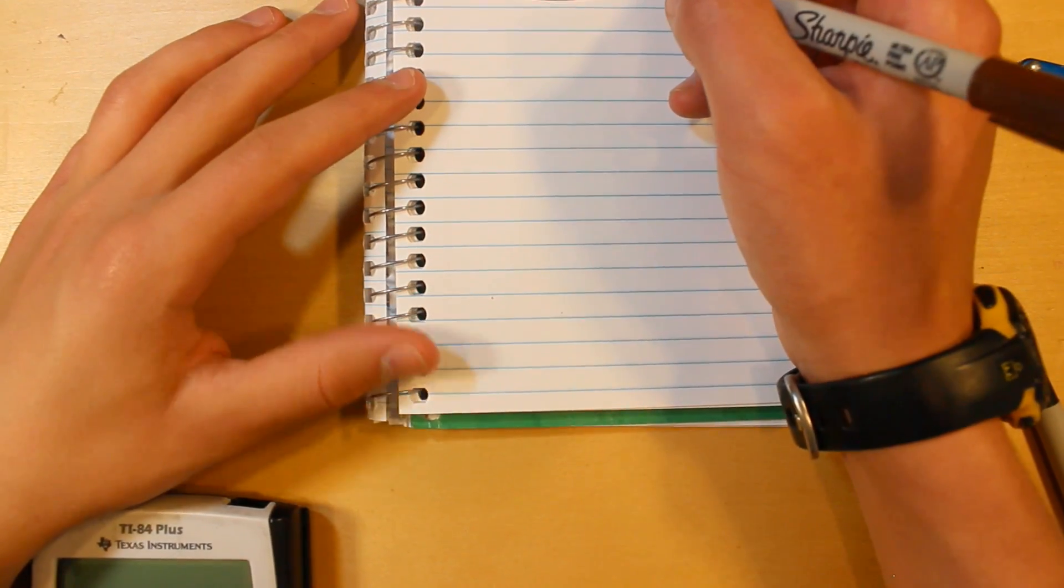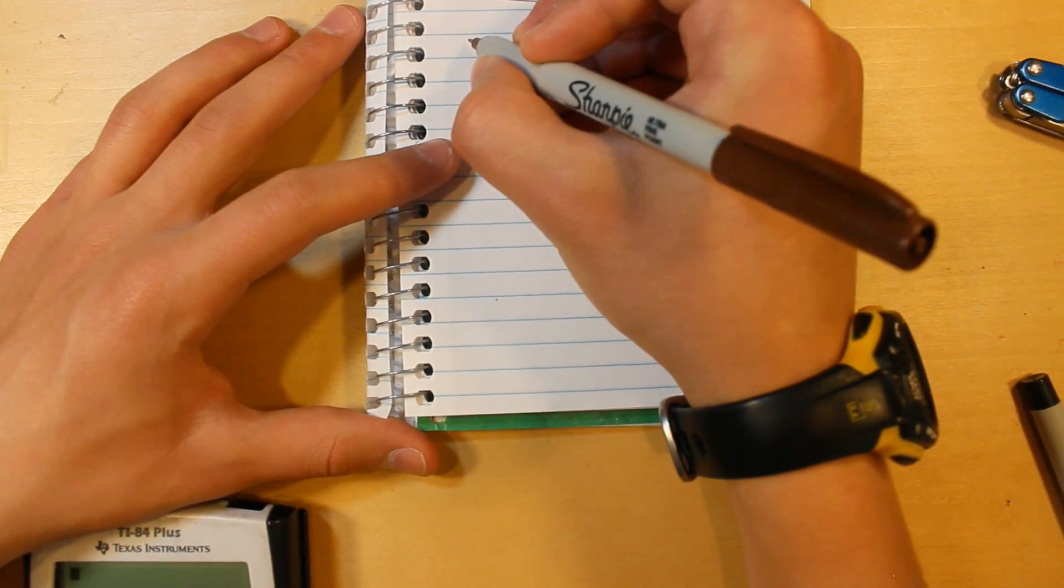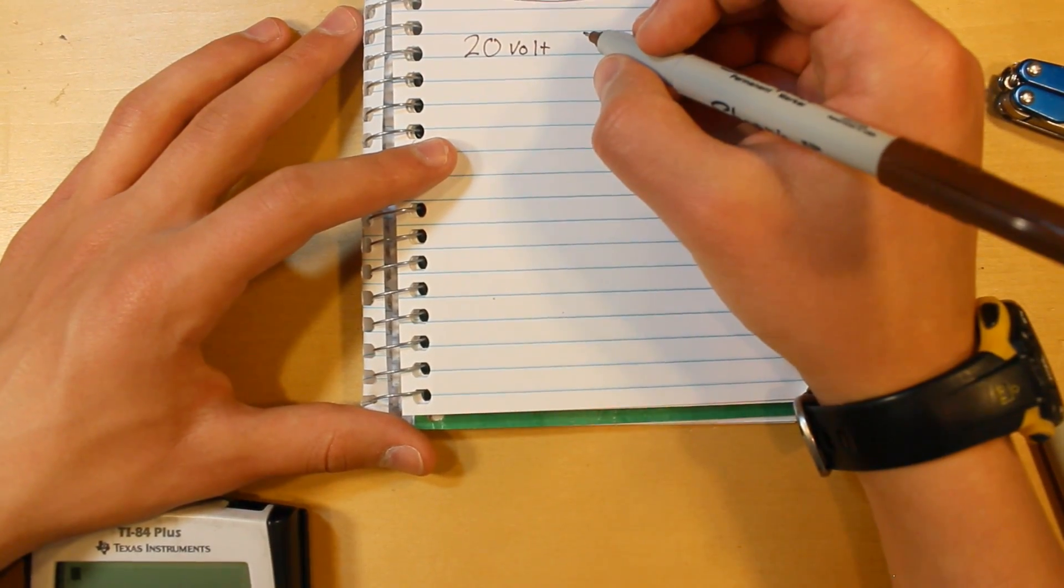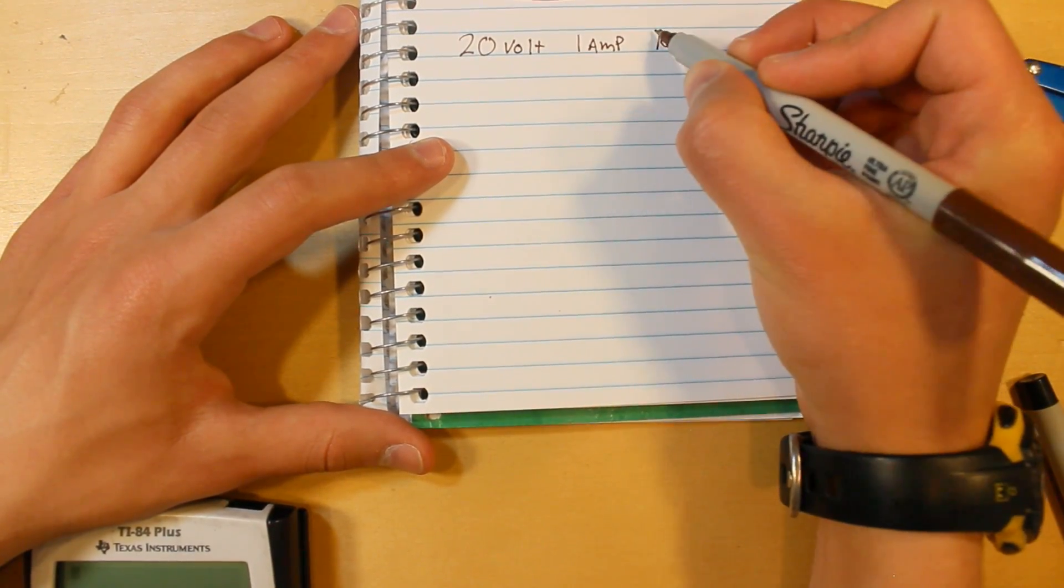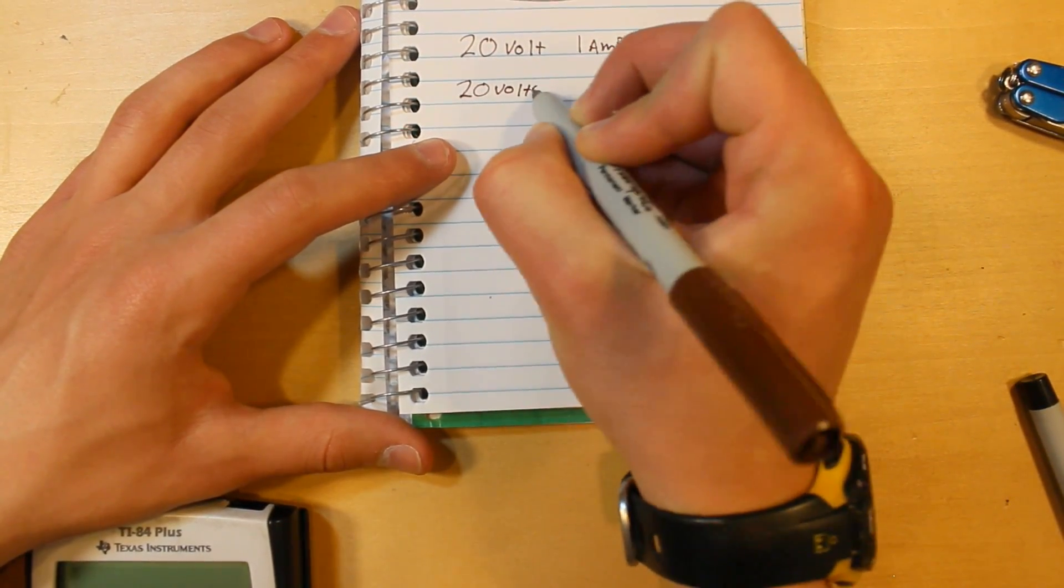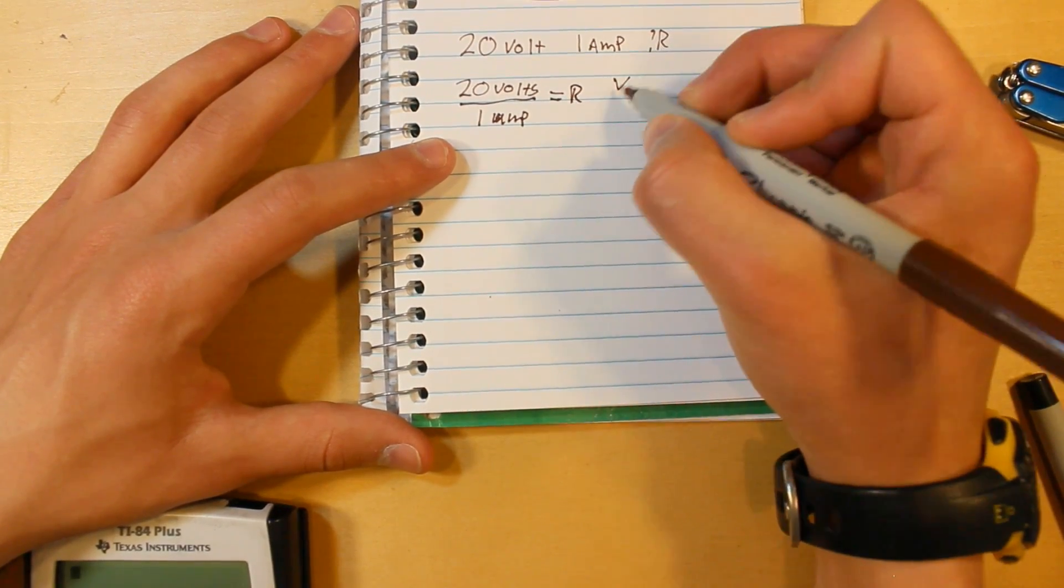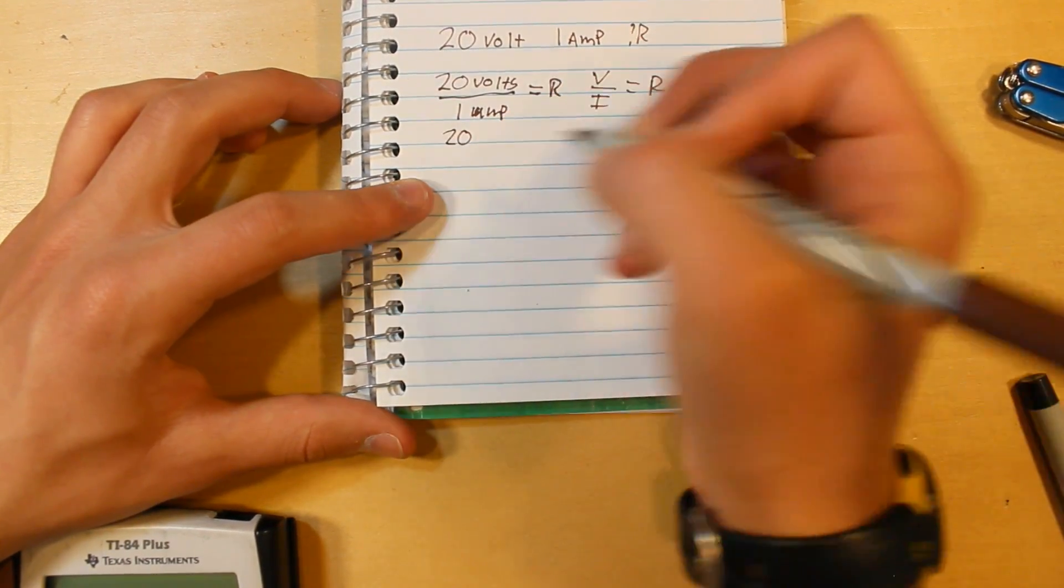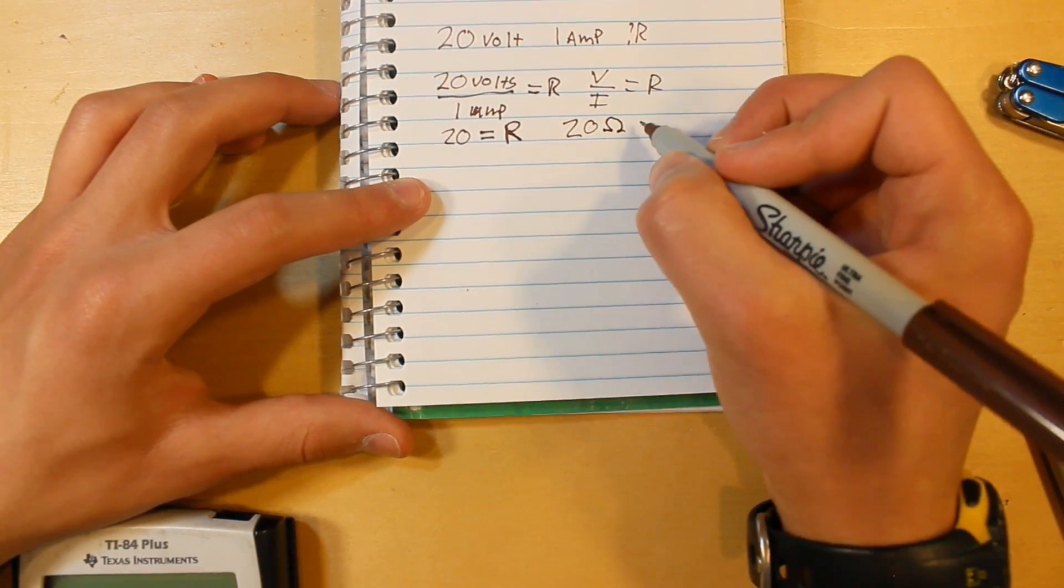Alright, let's look at another example where we have to calculate resistance. So for this, let's say that we have a 20 volt power supply and we have a circuit that needs, let's say, 1 amp. Okay, so how do we know what resistance our resistor should be in the circuit. Well, if we go 20 volts divided by 1 amp equals R, because we're just using the equation V over I equals R like I have up here. So 20 divided by 1 is 20 equals R. So that's what you need. You need a 20 ohm resistor for this circuit.